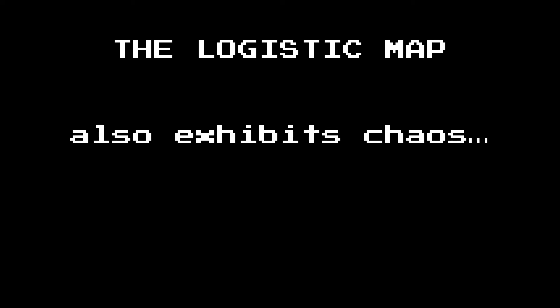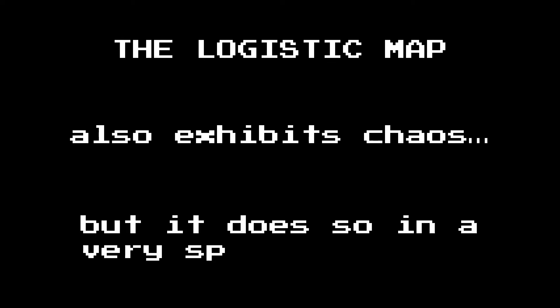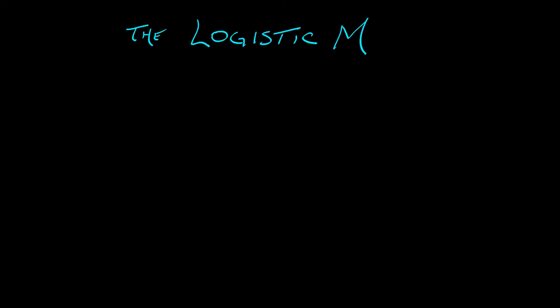We've seen chaos in the doubling map and in the tent map, but the logistic map from the very beginning of this series also exhibits chaos, and it does so in a very special manner. The logistic equation is x_{n+1} equals r times x_n times 1 minus x_n.